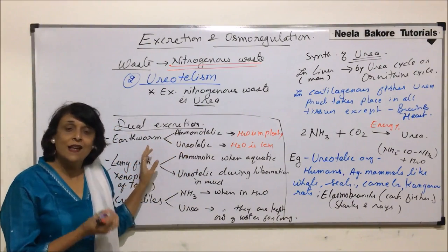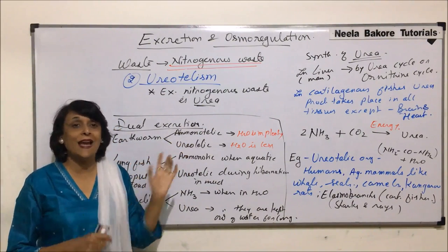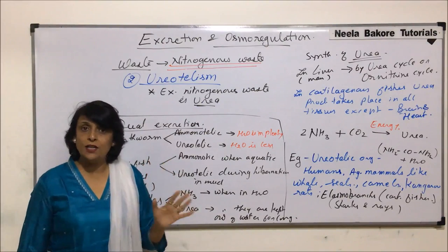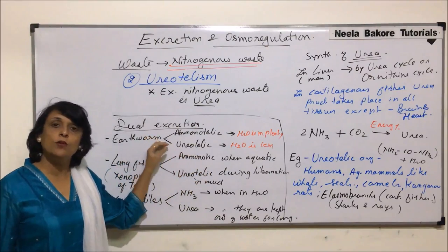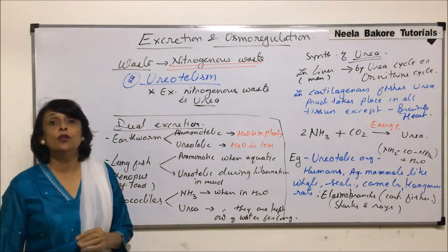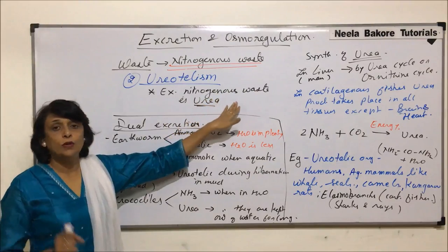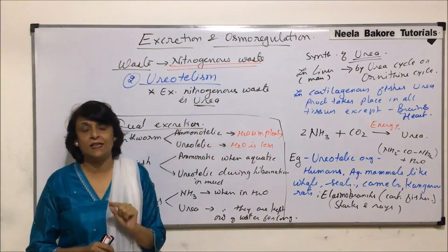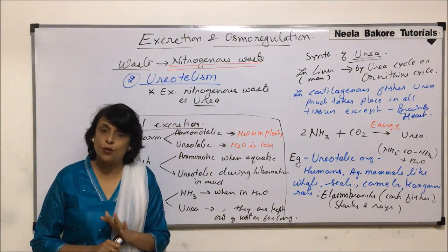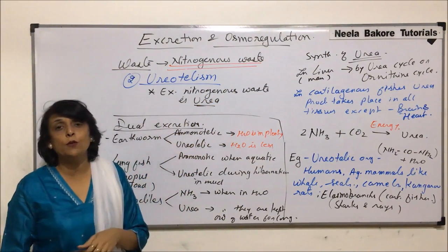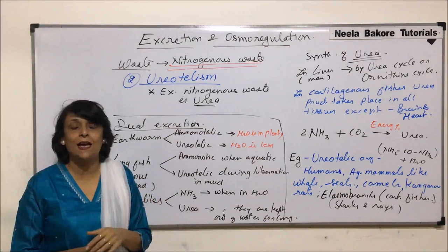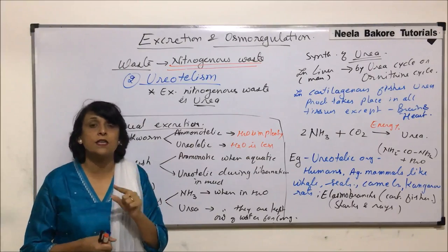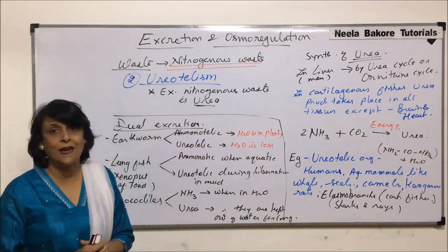This type of excretion is called dual excretion because the organism is capable of excreting two types of nitrogenous waste depending on conditions — ammonia when more water is available, and urea when water is less. We have seen ammonotelism and ureotelism in detail. In the next segment we will talk about the third main type, uricotelism, where uric acid is eliminated.